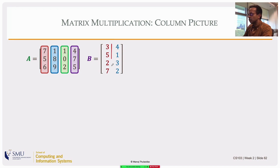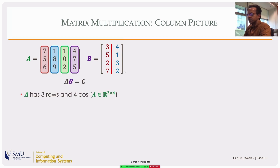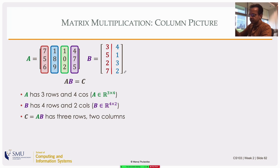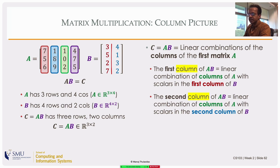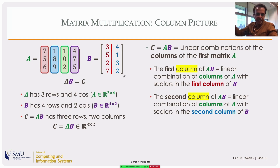Suppose B has two columns: divide it into two blocks — the first and second columns — and compute each column of the product using what we just did. For AB = C where A is 3×4 and B is 4×2, the product is 3×2. The first column of C is the linear combination of the columns of A with the first column of B; the second column of C is the same linear combination of A with the second column of B. This column picture of matrix multiplication is critical for understanding the rest of linear algebra.